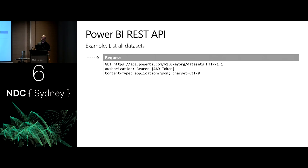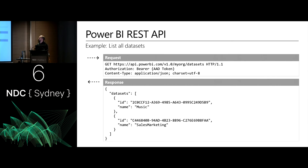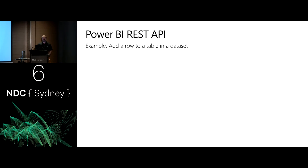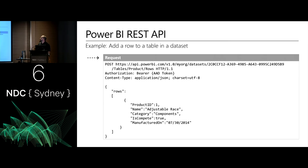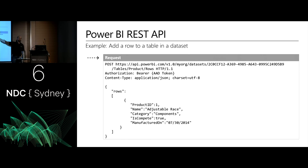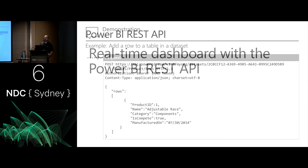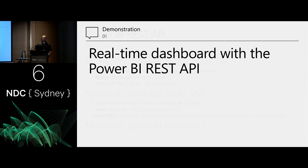What happens under the covers: listing data sets is essentially a GET request — having authenticated, your token is added to the header, and the response comes back as JSON. When adding a row to a table, you retrieve the GUID for your data set, specify the table name, and push to the rows endpoint with a valid JSON document containing one or more rows to insert into that table. That was the demonstration on a real-time dashboard with the Power BI REST API.